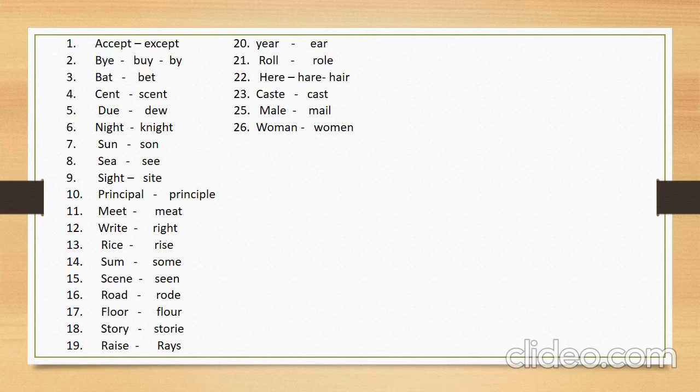Here are some examples of similar in sound words. Number one: 'accept' (qabool karna). Its similar in sound word is 'except' (ilava iske). These are words similar in sound but different in meaning as well as spelling.